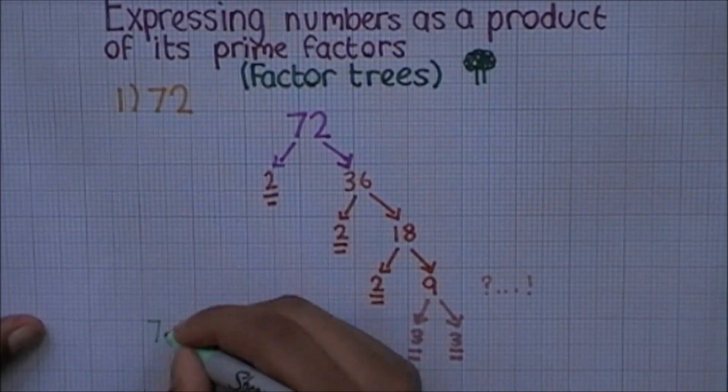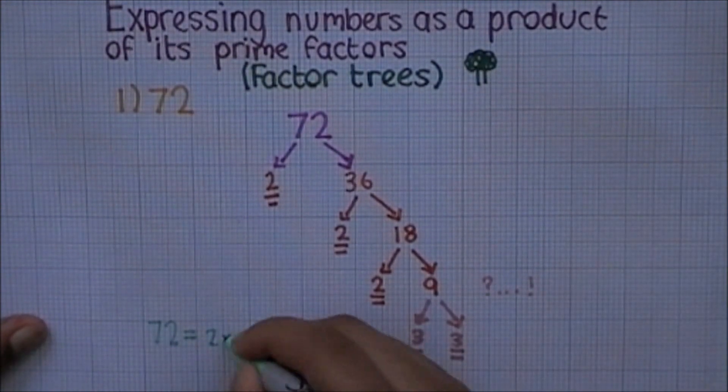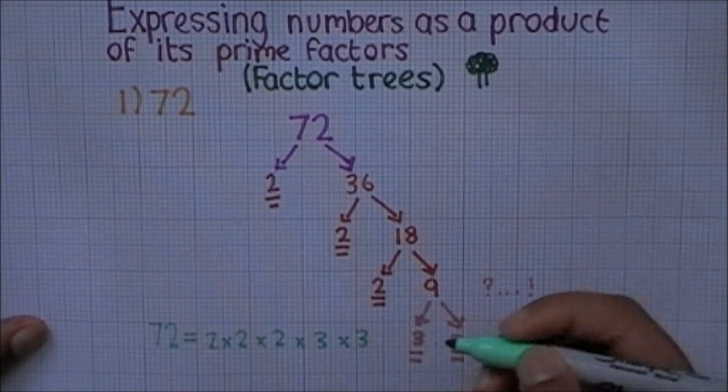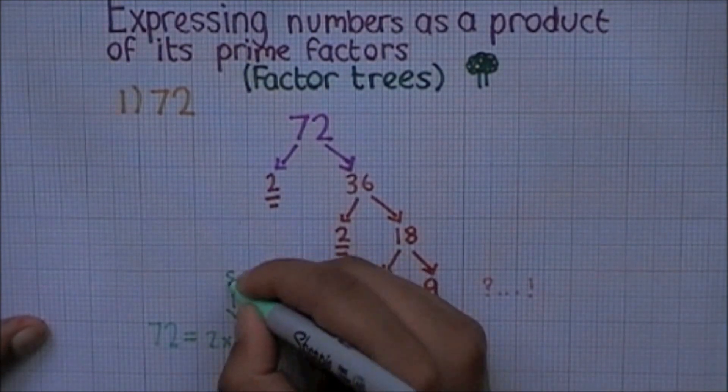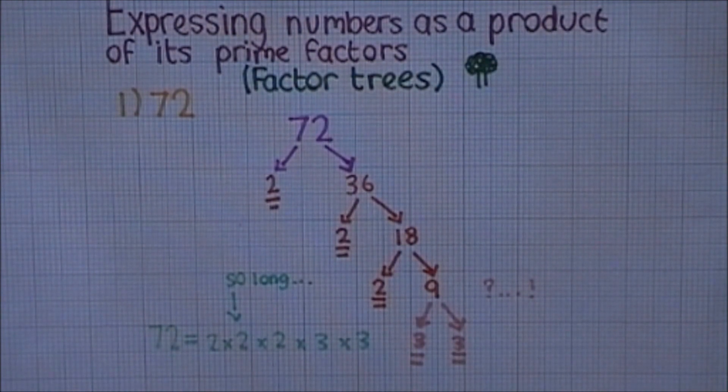Now we can use those prime factors, which we've been collecting along the way, and write them out like this. You could write 2 times 2 times 2 times 3 times 3, because that is what's there, but it's not quite a normal way of writing it out. And in maths, it's useful to write things out in the shortest way possible.